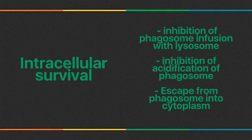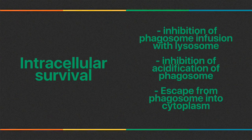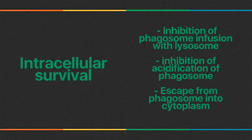In granulomatous inflammation, bacteria sometimes survive within macrophages and form granulomas. Examples of such bacteria include Mycobacterium, Legionella, Brucella, and Listeria. Importantly, these bacteria can be cultured on microbiological media in the lab, which distinguishes them from obligate intracellular organisms.